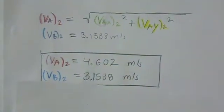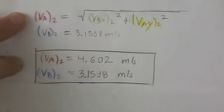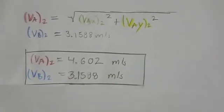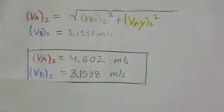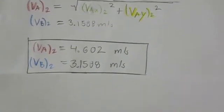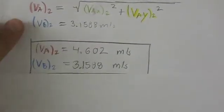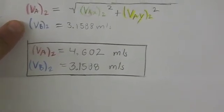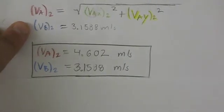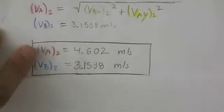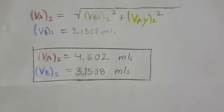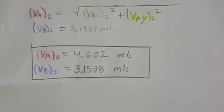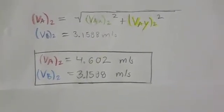To find the final speed of A, we take the square root of (vAx_final² + vAy_final²). The final velocity of B equals its x-component since there is no y component. So the final answers are: the final velocity of A is 4.602 m/s, and the final velocity of B is 3.1588 m/s.